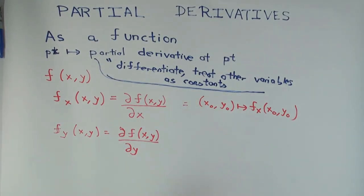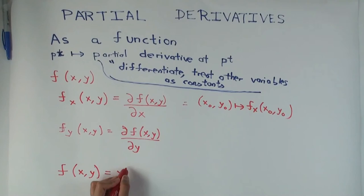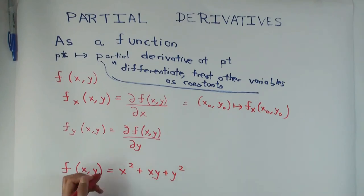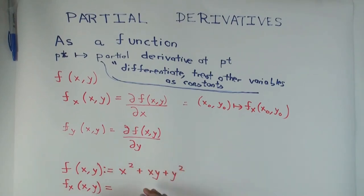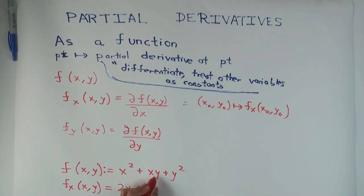Let me take an explicit example. Say f(x, y) = x² + xy + y². If you want to compute f sub x, the good news is you don't have to use the limit of a difference quotient. You just formally differentiate with respect to x, treating y as a constant whose value you don't know. The derivative of x² is 2x. Then for xy, since y is a constant, you pull y out and get y times the derivative of x.